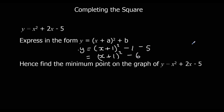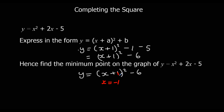Hence find the minimum point on the graph. Completing the square is really useful for finding a minimum point. The smallest value we can get is when the bracket equals 0, because if the bracket is more than 0 and we're squaring it, it's always going to be positive. What makes the bracket 0 is x equals minus 1, because we've got plus 1 in the bracket. When x is minus 1 the bracket is 0, and then y equals minus 6. So the minimum point is minus 1, minus 6.